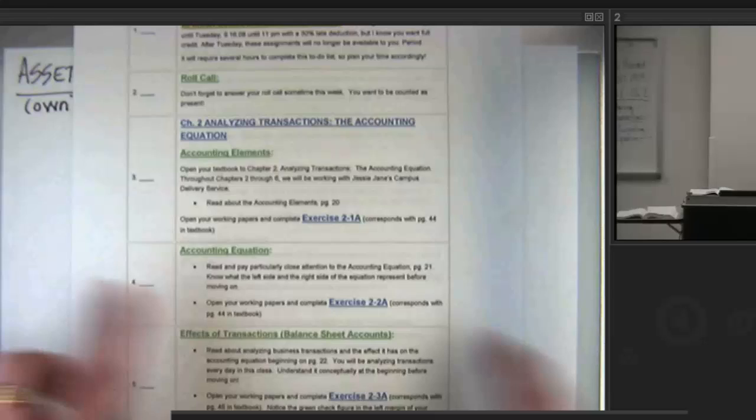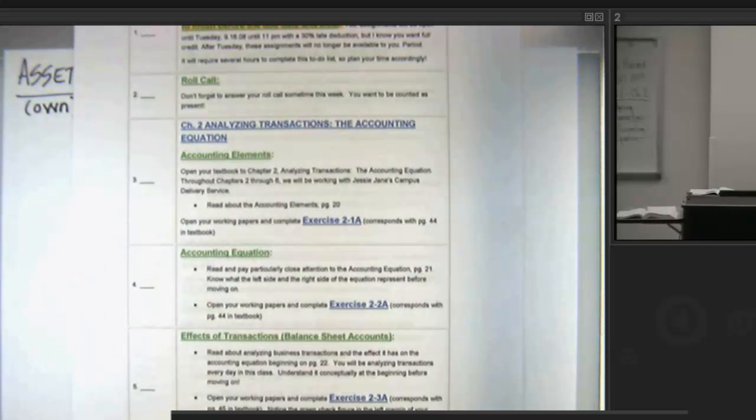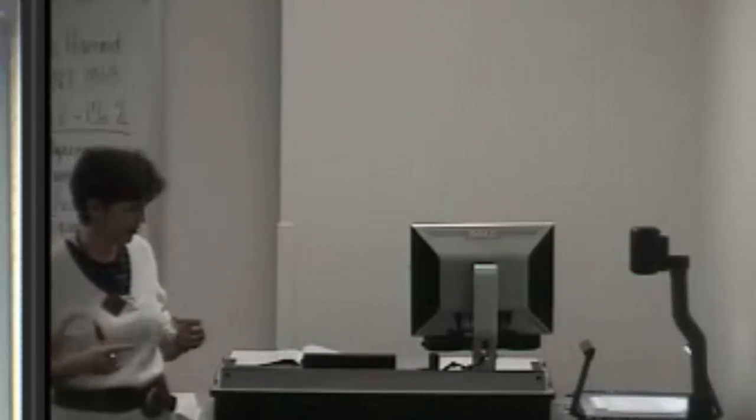So step number four tells you a little bit more about that and asks you to complete Exercise 2, 2A, which is in your working papers. This transaction is going to be at the point where, let's say you went out maybe for fuel to fill up this motor scooter that you're delivering these packages with in Jessie Jane's business, and you paid for fuel.